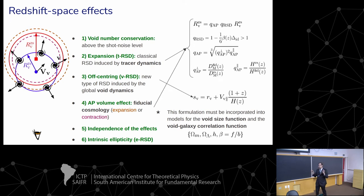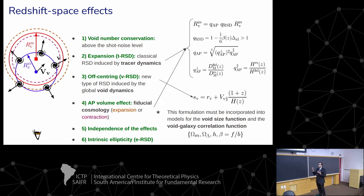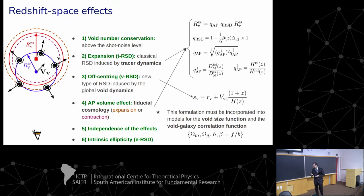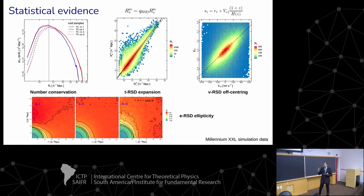We provided a complete theoretical framework to describe this effect based on physical and dynamical considerations. The important thing is that this framework depends on the cosmological parameters, so this formulation must be incorporated in current models for the void size function and the void-galaxy correlation function in order to obtain unbiased cosmological constraints. We also provided a statistical framework to probe this effect with the help of a numerical simulation.